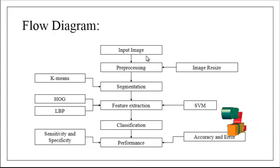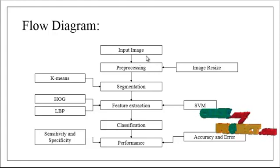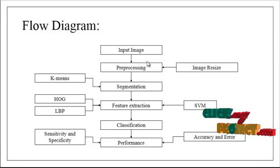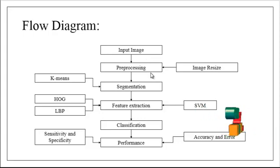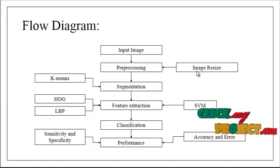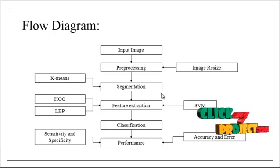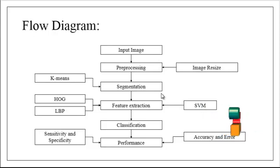At first, the input image is taken from the dataset. The dataset consists of both affected and non-affected crop images. After getting the image, we move to the second step — preprocessing. In this preprocessing step, we resize the image to an aspect size of 256x256.